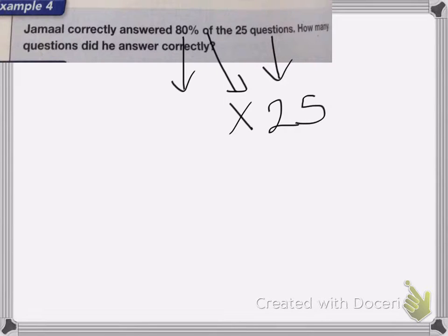Okay, so I can choose whether to change this into a fraction or a decimal. I'm going to change it into a fraction. It's a little bit easier. So 80% is 80 over 100, which is equal to 4 fifths.